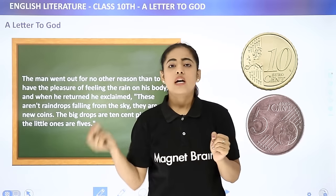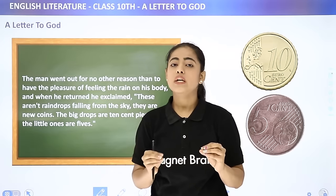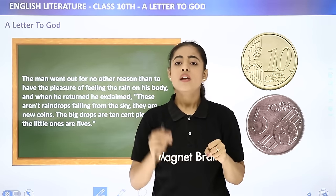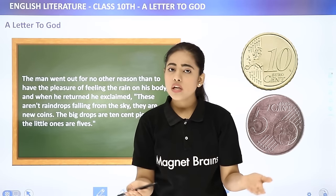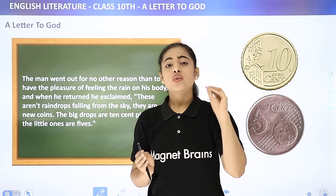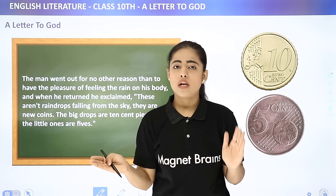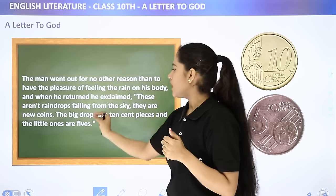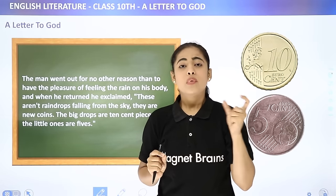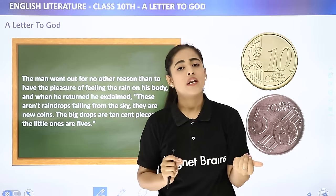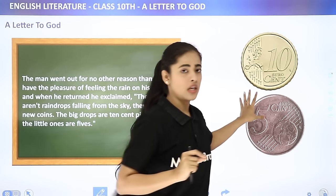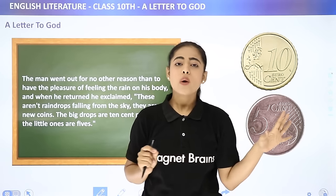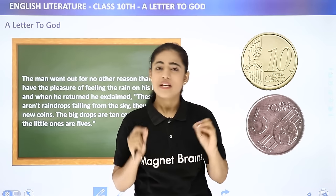'The big drops are 10-cent pieces and the little ones are 5-cent pieces,' Lencho said, giving a proper currency denomination. Ten cents for the big drops, five cents for the small ones. With a satisfied expression, he regarded the field of ripe corn with its flowers draped in a curtain of rain — a beautifully depicted scene of Lencho thankfully looking at his flower-filled corn field covered like a curtain by the rain.